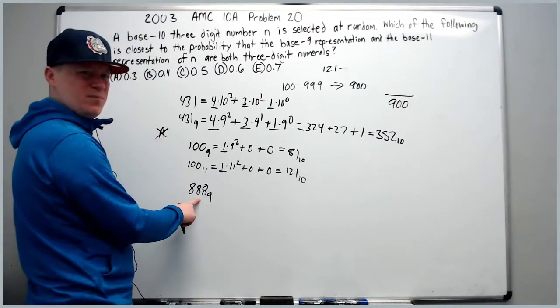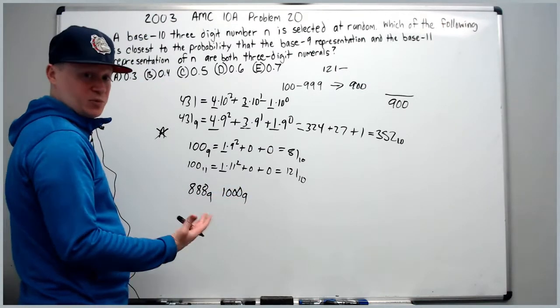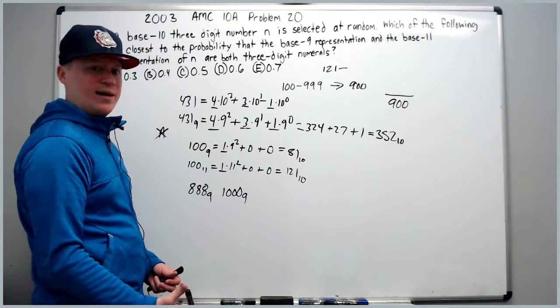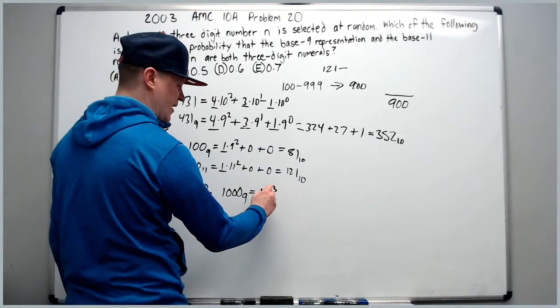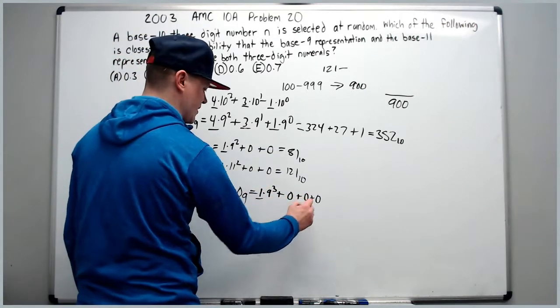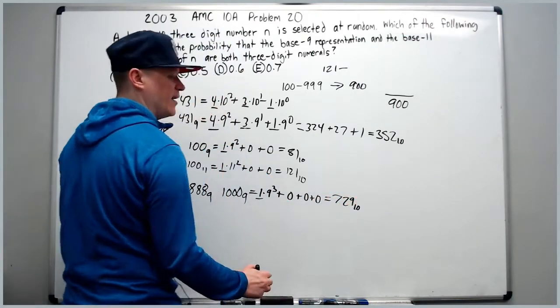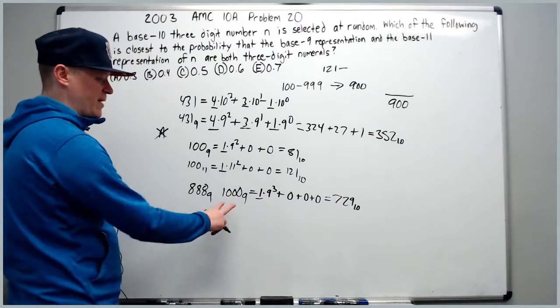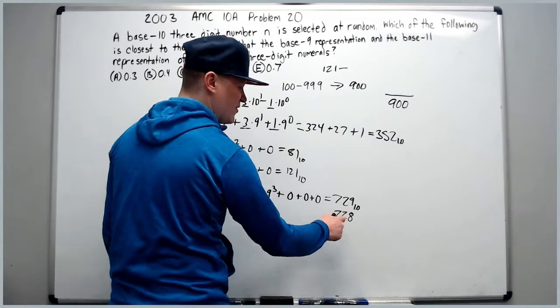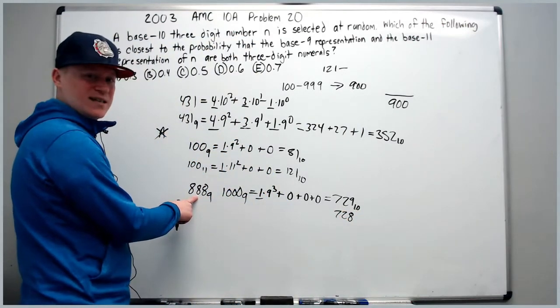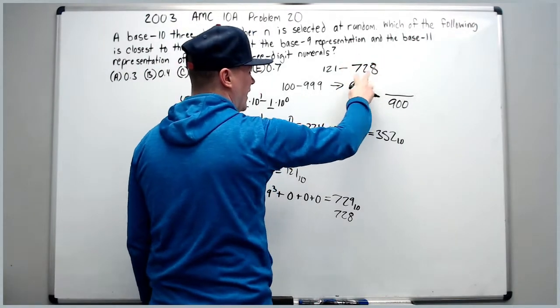Instead of doing this though, a better method is to use 1000 base 9, which is too big, and then subtract 1. So if I do this, this is much faster to calculate. It's simply 1 times 9 cubed plus 0 plus 0 plus 0, which is 729 base 10. So 729 is actually too big because it puts us in a 4 digit base 9 number, but it must mean that 728 would be equal to this because it's 1 less.